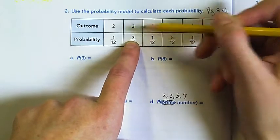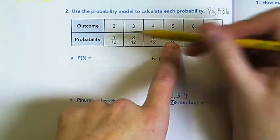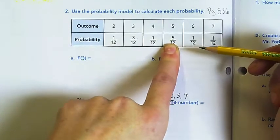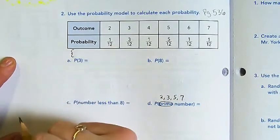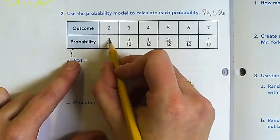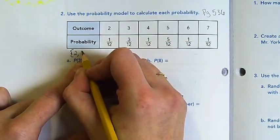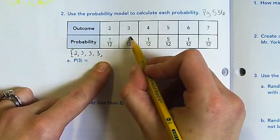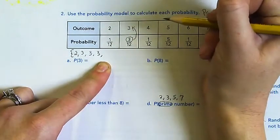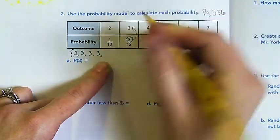If we needed to, we could write our sample space. I'm going to draw out the sample space. We know that there's one, two, three threes because our numerator is three for our outcome of three. Our numerator for our outcome of four is one, so there's only one four.